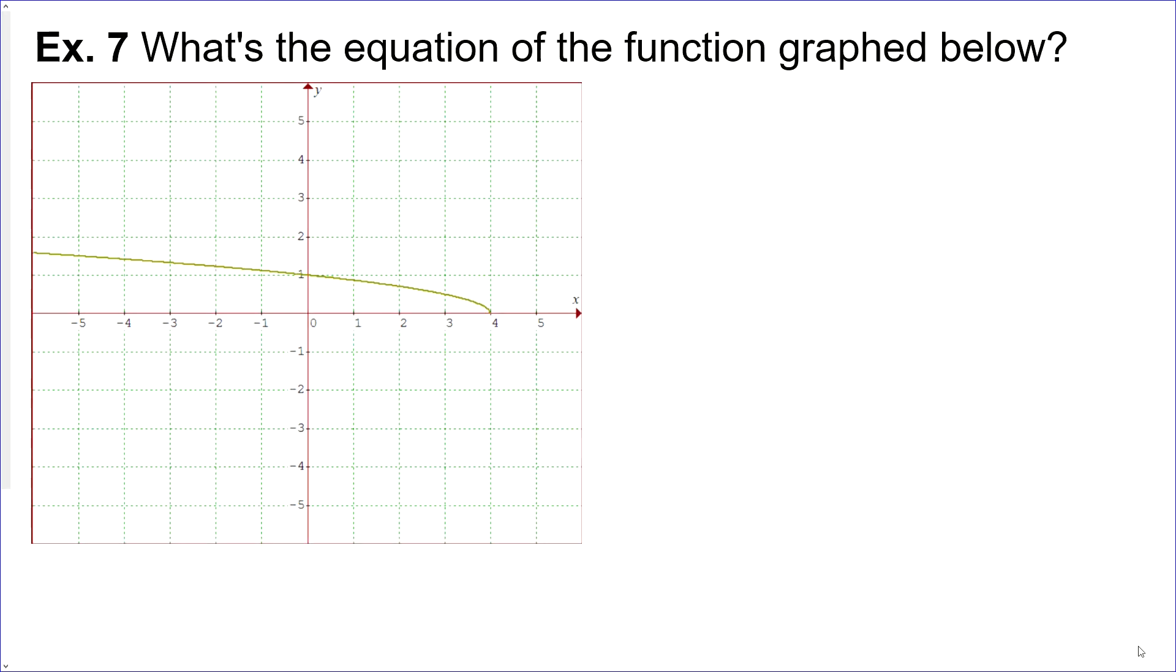What's the equation of the function graphed below? Pause the video. See if you can get it and restart when you have it. But first thing that we notice is that there's a horizontal reflection because now it's heading off to the left. Normally it goes to the right. So there is a horizontal reflection over the y-axis. And now it goes up one and over four, whereas before it goes up one over one. So there's also a horizontal stretch by a factor of four. Now, if you've got something else, that's okay. We'll talk about that in a minute.